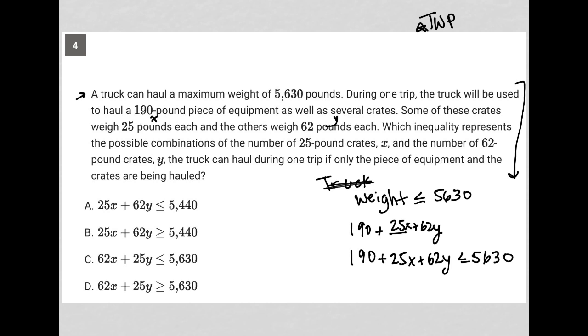I hope that that's clear. All of this represents the weight being carried by the truck. So if I were to simplify this, I'd subtract 190 from both sides. I'd have 5,440 there. So I'd have 25X plus 62Y is less than or equal to 5,440. That's what I get from simplifying this.